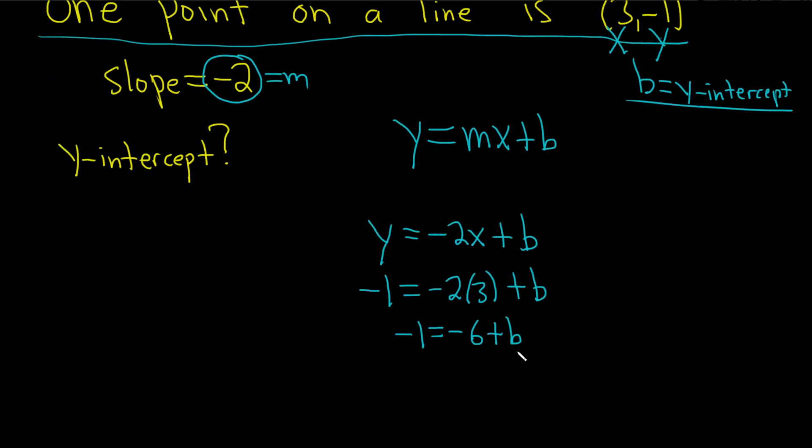And then to solve for b, we just add 6 to both sides. So plus 6, plus 6. So 6 plus -1 is 5, and that's equal to b.